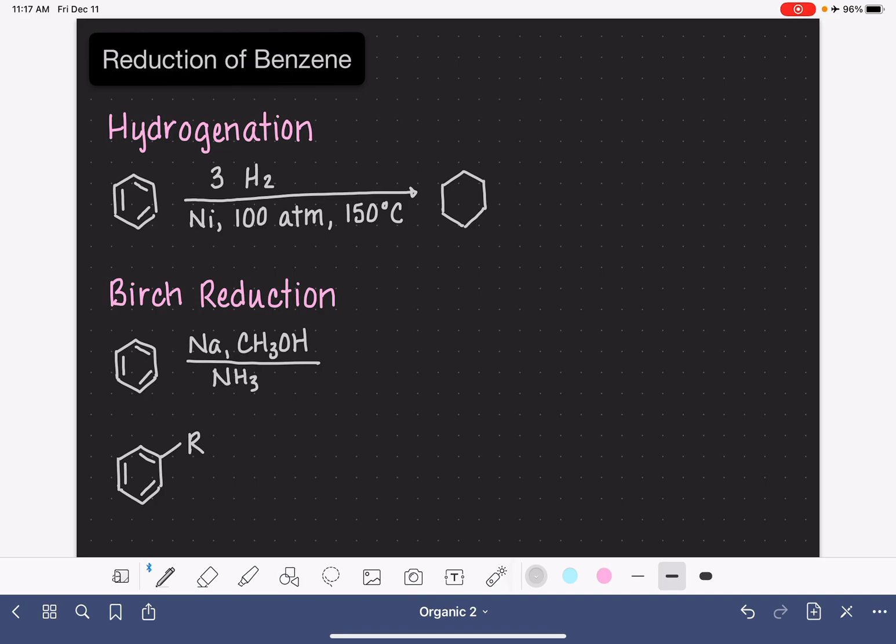And this removes one of the double bonds in the benzene ring, but not both of them, and it creates an isolated diene.